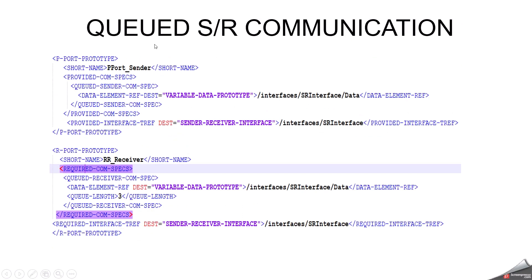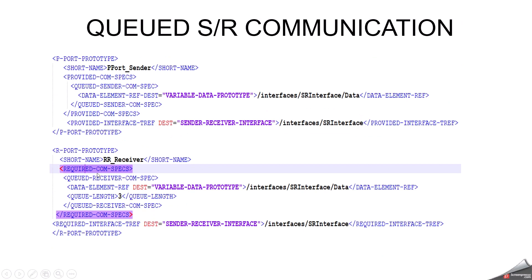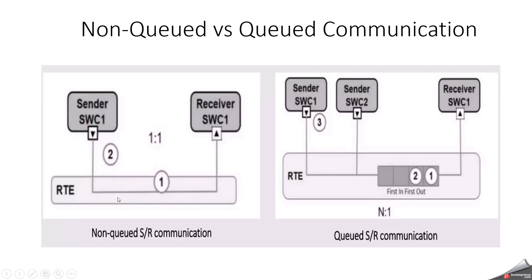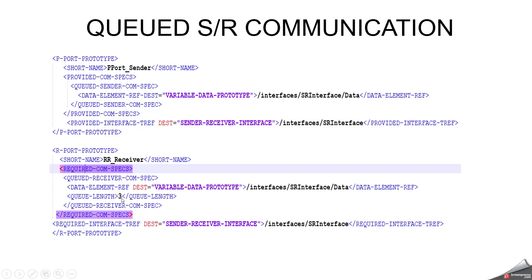This is an example of how we can design the P and R port when choosing a queued sender receiver communication. For the P-Port, it has the provided comspec. Here we will mention the VDP, which will be equally configured inside the sender receiver interface. On the R-Port side, we will have a required comspec and we should define a queue length. Based on the queue length, the queue will be created. Here I have mentioned the queue length as 3, so RTE will handle 3 data buffers. We also need to mention the sender receiver interface here.